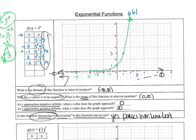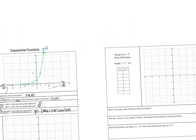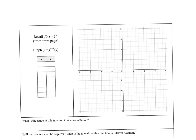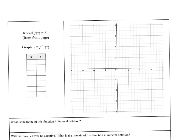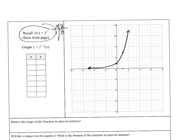Before we get to the next one on this page, we're going to switch to the back page and recall what 3 to the x looks like. I'll do a little sketch of 3 to the x one more time: when we plugged in 0 we were at 1, when we plugged in 1 we were at 3. From our table: 1 gave us 3, 0 gave us 1, and negative 1 gave us 1 third.